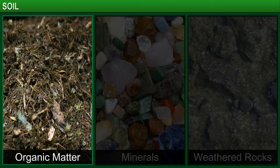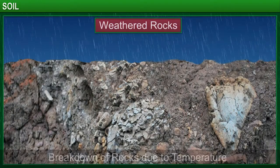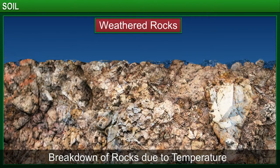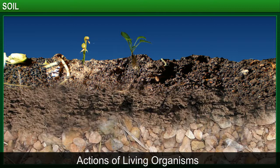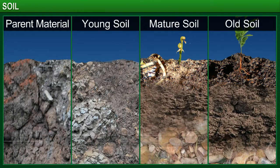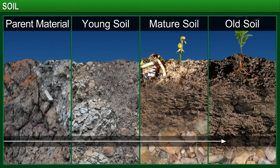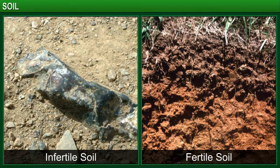Soil is made up of organic matter, minerals and weathered rocks. Weathered rocks are a result of the breakdown and decay of rocks by changes in temperature, frost, and actions of living organisms. This process is very slow and is called weathering — so slow that it takes hundreds of years for just one centimeter of soil to form. During weathering, rock debris gets mixed with organic matter and minerals, which help to increase the fertility of the soil.